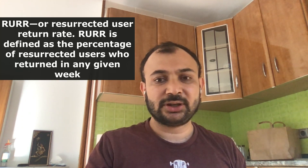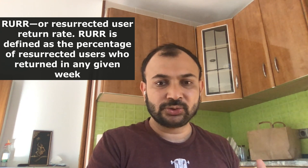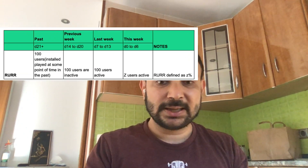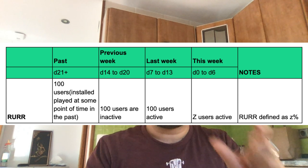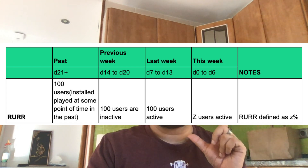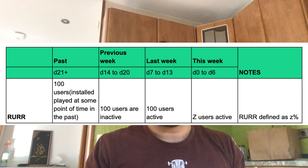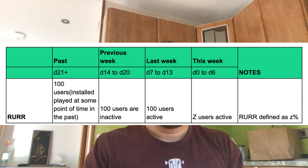The last of the three metrics is RER, or the Resurrected User Return Rate. RER is defined as the percentage of resurrected users who returned in any given week. These are users who installed an app at some point in the distant past, went away for at least a week — potentially longer — and then came back. The important nuance here is that RER does not measure just how well you resurrect users; it measures how well you retain those resurrected users. Getting users back via lifecycle communications is just the first step. What is just as critical — and arguably even more critical — is that your product be strong enough to retain these users after they come back. The strongest apps I have seen have had a RER of 45 to 50% or more.